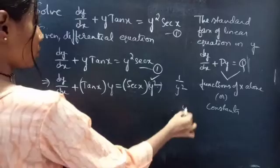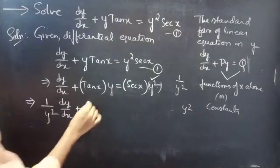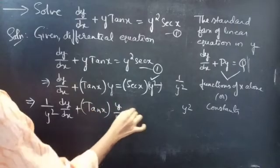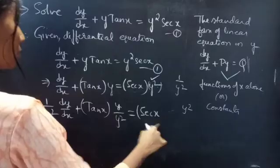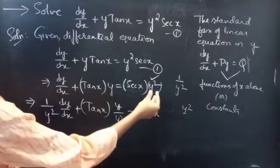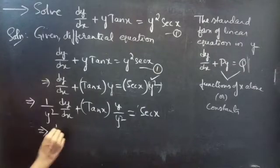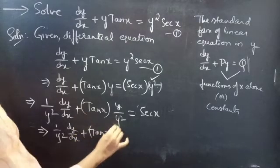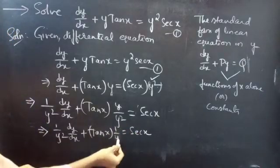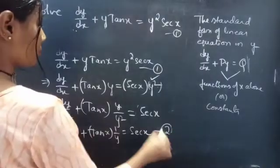Multiplying through by 1/y squared, we get 1/y² times dy/dx plus tan x times y/y² equals secant x, which simplifies to 1/y² times dy/dx plus tan x times 1/y equals secant x. Consider this equation as equation 2.